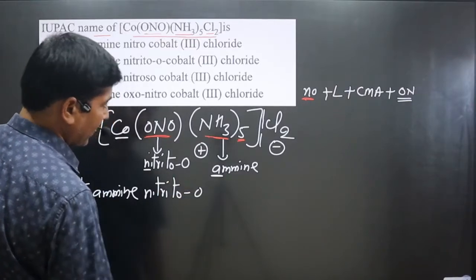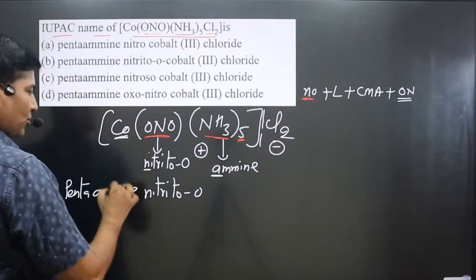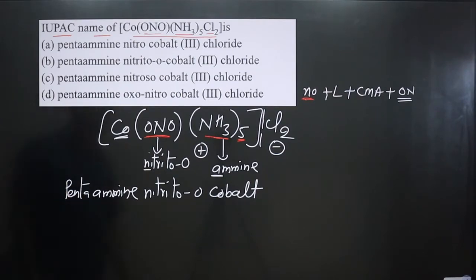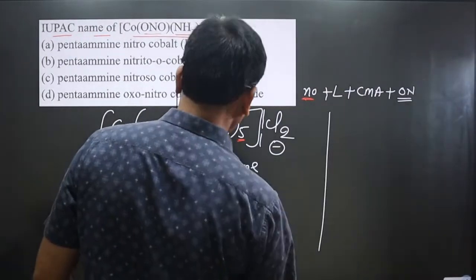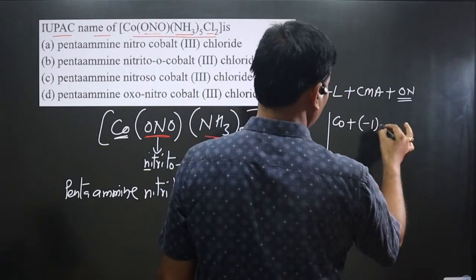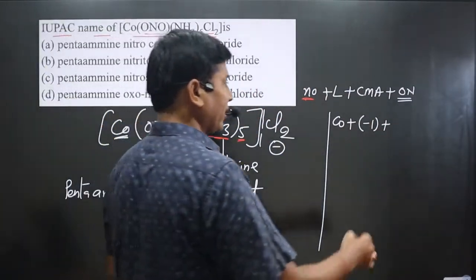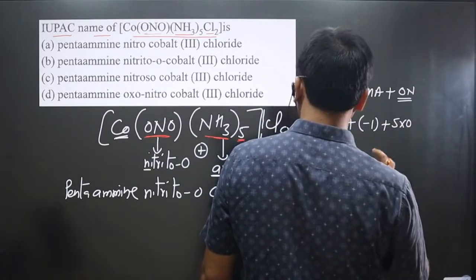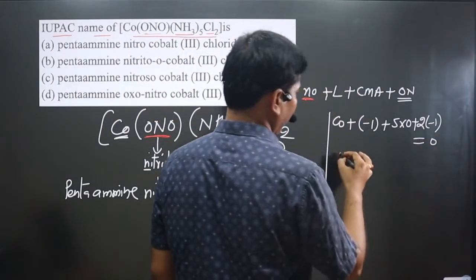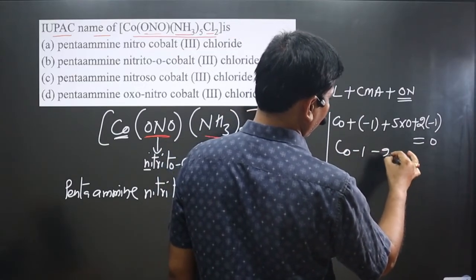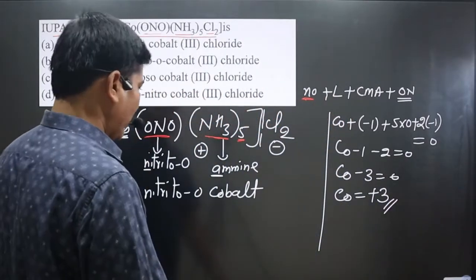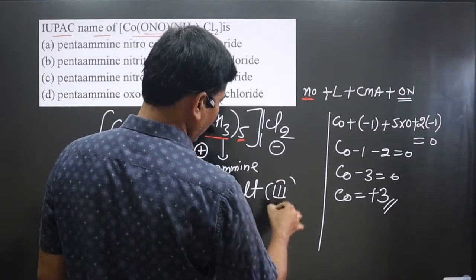Next, the central metal atom cobalt, using its common name. Then we calculate the oxidation number of cobalt. The nitrito-O is a negative unidentate ligand carrying a minus one charge. The five ammonia molecules are neutral ligands with zero charge (5 × 0 = 0). The two chloride ions outside the bracket each carry minus one charge. So: cobalt + (−1) + 0 + (−2) = 0, giving cobalt − 3 = 0, so cobalt is in the +3 oxidation state, written as Roman numeral III.